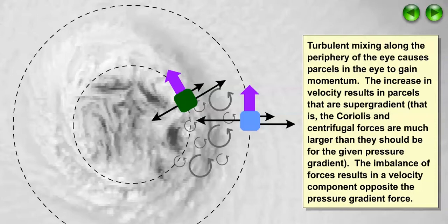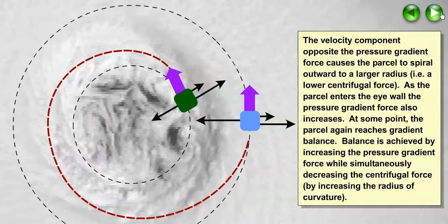The imbalance of forces results in a velocity component that is directed opposite the pressure gradient force. This velocity component causes the parcel to spiral outward to a larger radius, which reduces the magnitude of the centrifugal force.